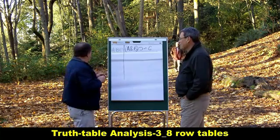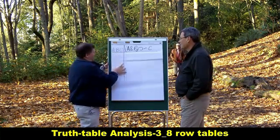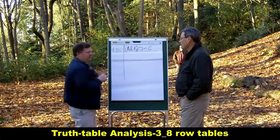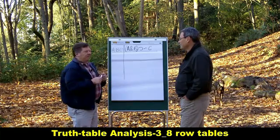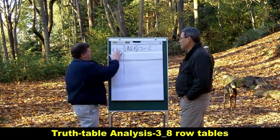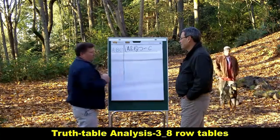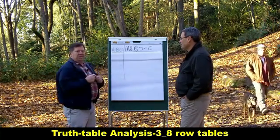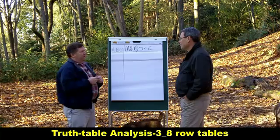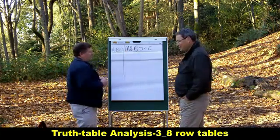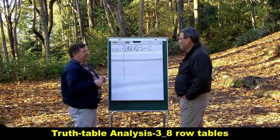And then underneath the letters we're gonna write all the possible truth-value combinations that these three letters could have. And there's gonna be eight of them. Remember that if you take two and raise it to the nth power, where n is the number of letters in your formula...